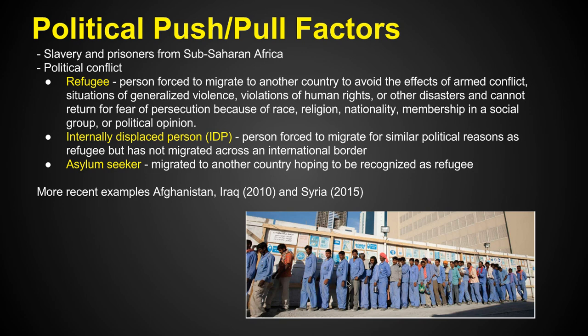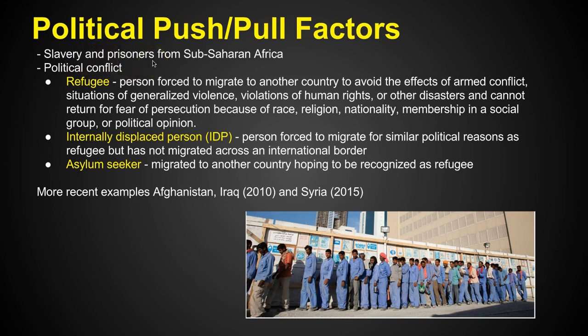Political is the first factor we're going to consider. What are the reasons people are politically being pushed or pulled from or to a country? The first one from history that's very common to think about is slavery, where people were forced out of their country — they were forced into slavery, or they were prisoners — and a lot of those came from sub-Saharan Africa.